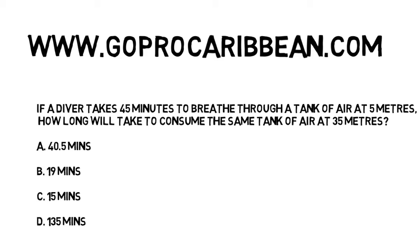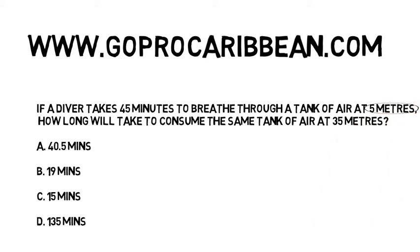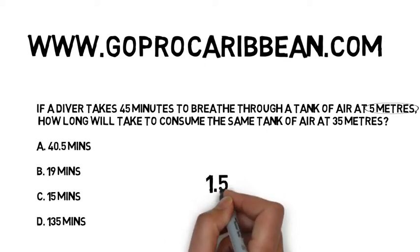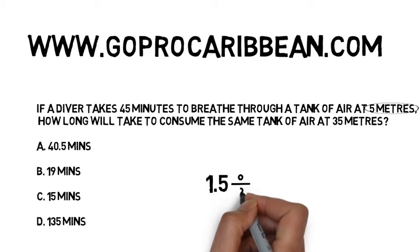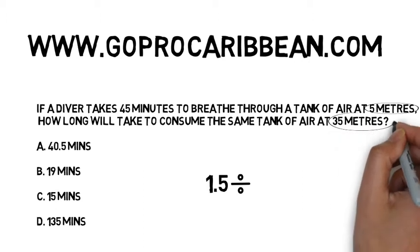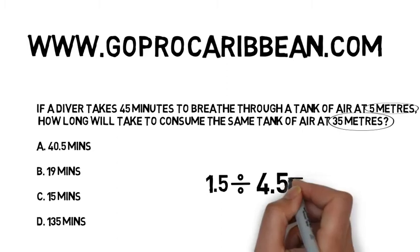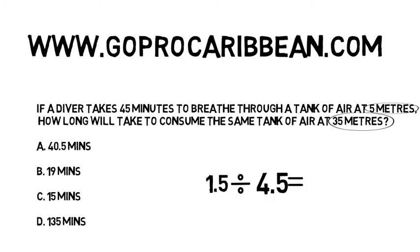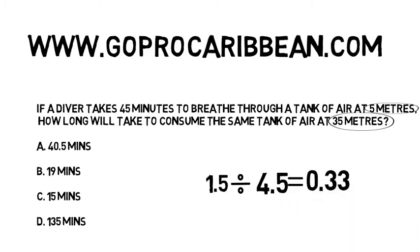With the first depth second depth approach, we divide the pressure at the first depth — the starting depth — by the pressure at the depth the diver is going to. At 5 metres of saltwater it's 1.5 atmospheres; we divide that by the pressure at 35 metres of saltwater, which is 4.5 atmospheres. The answer to that is our change factor, or change constant, which is 0.33.